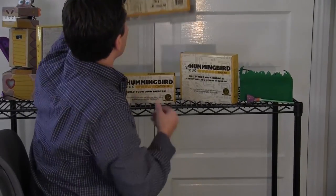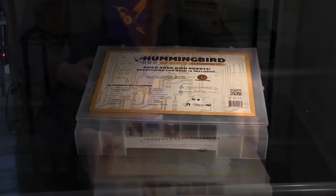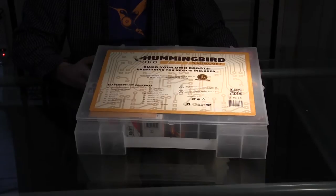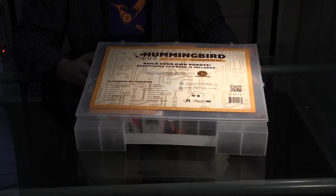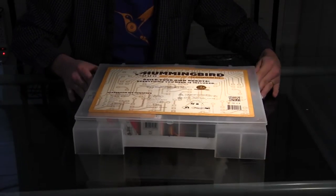Let me get it out here. The Hummingbird Duo Classroom Kit has enough parts for eight to twelve students working in teams of two to three, and for each team to create a large robotic creation with the parts from the kit.